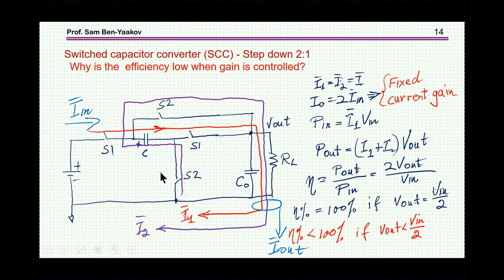So, the question now is, why is it that the efficiency of a regular switch capacitor converter is high or could be high when you have the right transfer ratio, and when you are trying to control it, the efficiency will go down. This is very important to understand, because this is a feature of the topology we are talking about, as we'll see later on.